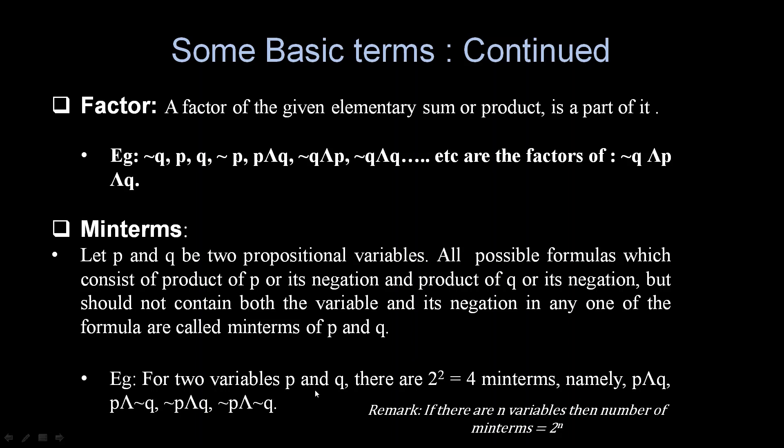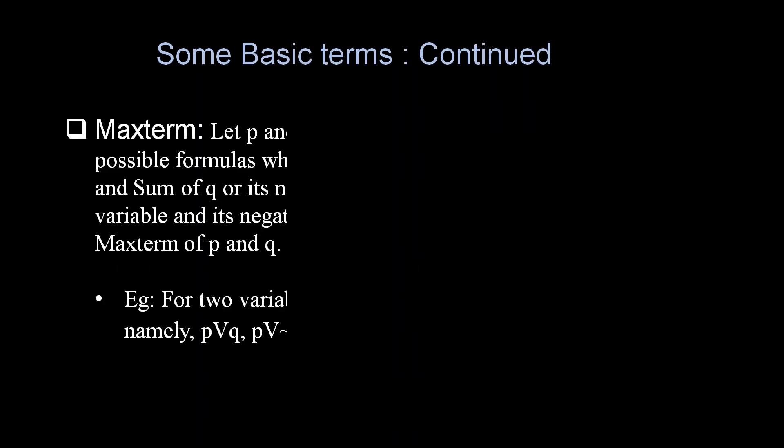For example, for two variables P and Q, there are 2² = 4 minterms, namely: P∧Q, P∧¬Q, ¬P∧Q, ¬P∧¬Q. Remark: if there are n variables, then number of minterms is 2ⁿ.